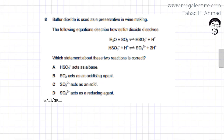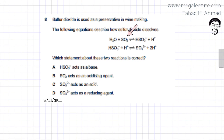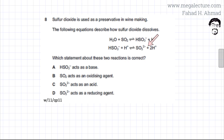The question states that sulfur dioxide is used as a preservative in winemaking. Two equations are given: in the first, SO2 reacts with water to produce HSO3⁻ plus H⁺; in the second step, HSO3⁻ combines with H⁺ to give SO3²⁻ plus 2H⁺. The question asks which statement about these two reactions is correct.